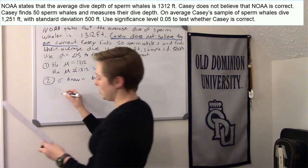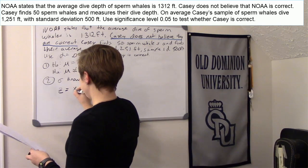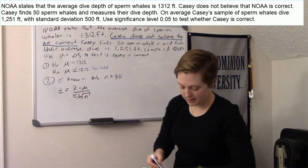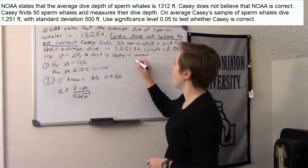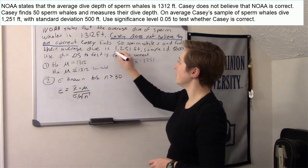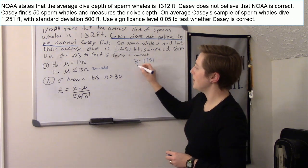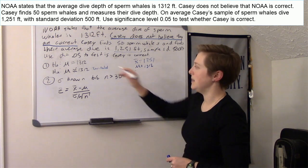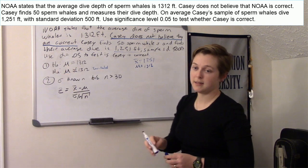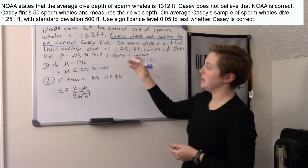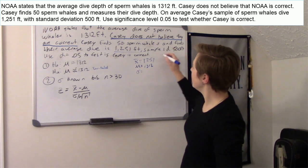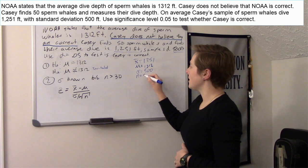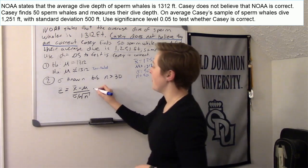We're going to use the z-test. X-bar from the sample is 1,251. Mu — always assume the null is true — is 1,312. That's why the null hypothesis has the equal sign. Sigma, really the sample standard deviation, but because sample size is large we assume it's close enough to sigma, so that's 500. And n, our sample size, is 50.